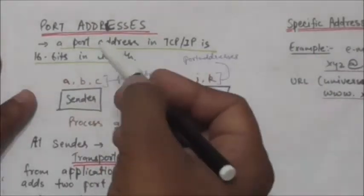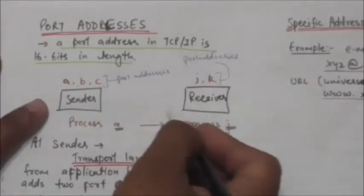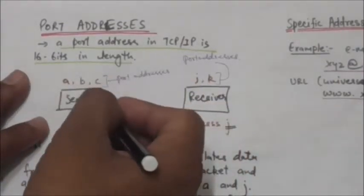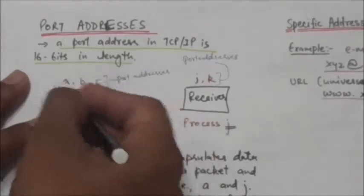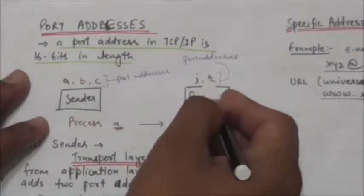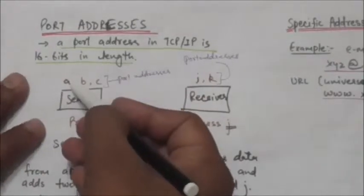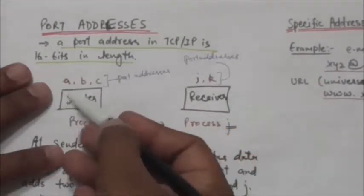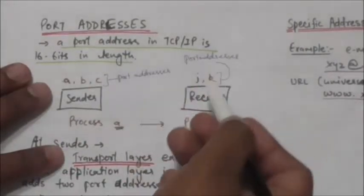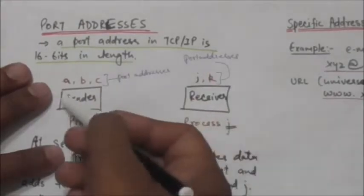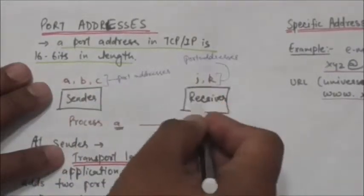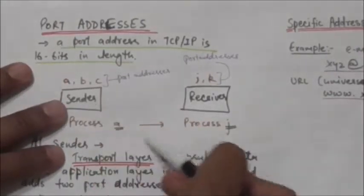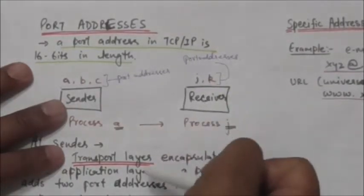The IP address and the physical address are necessary for transferring data from source computer to destination computer, but that is not our final objective. Our final objective is that a particular process running on a sender computer sends some data to another process running on a destination computer. Whatever data is sent by the sender process should be received by the intended destination process.